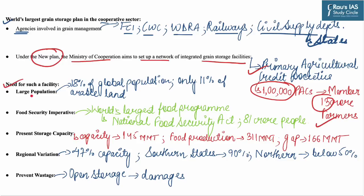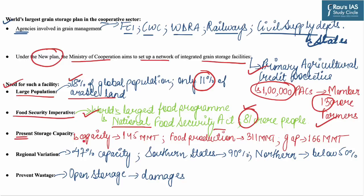Under this new plan, the Ministry of Cooperation is aiming to set up a network of integrated grain storage facilities through Primary Agricultural Credit Societies (PACS). There are more than 1 lakh PACS with a huge member base of 13 crore farmers. India, the most populous country in the world, accounts for 18% of global population but only 11% of arable land. India runs the world's largest food program under the National Food Security Act covering around 81 crore people. Presently, India has a food grain storage capacity of 145 million metric tons against total food production of 311 million metric tons — leaving a gap of 166 million metric tons.